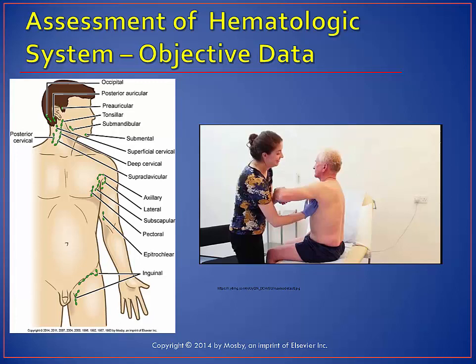Ordinarily, lymph nodes are not palpable in adults. If a lymph node is palpable, it should be small — 0.5 to 1 centimeter — mobile, firm, and non-tender to be considered a normal finding. A node that is tender, hard, fixed, or enlarged, regardless of whether it's tender or not, is an abnormal finding and warrants further investigation. Tender nodes are usually a result of inflammation, whereas hard or fixed nodes suggest malignancy.